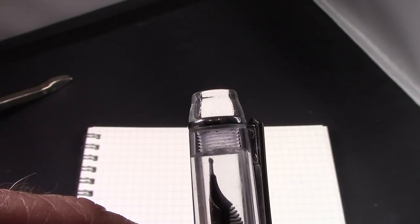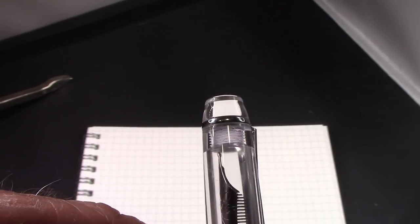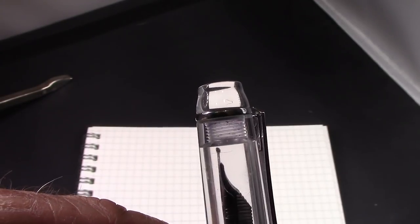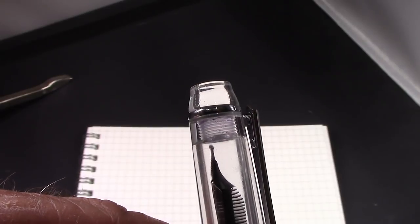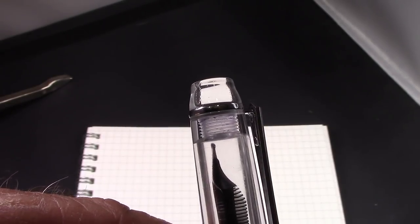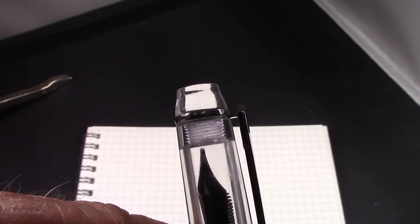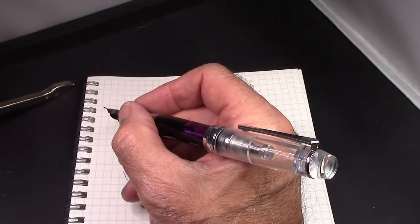I just want to show that even though the Nemosine nib is a millimeter longer than the PenBBS nib, in this 456 model there's still plenty of clearance between the end of the nib and the end of the cap.